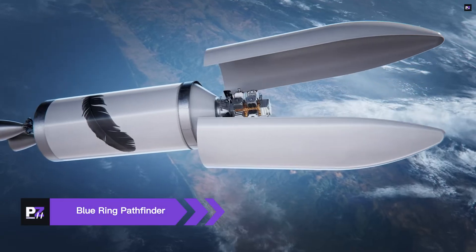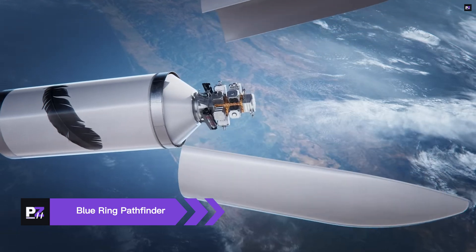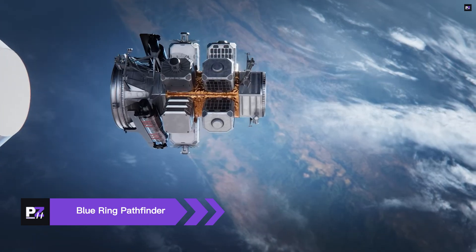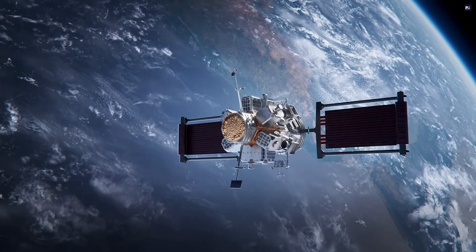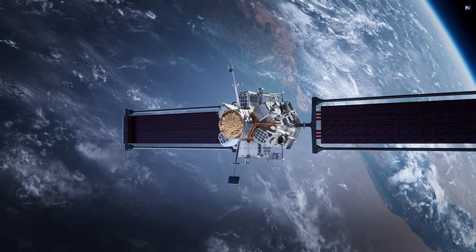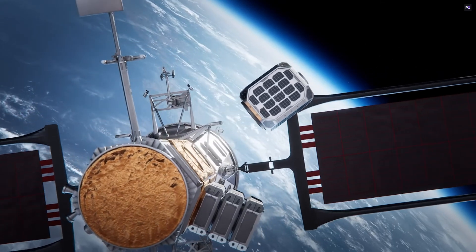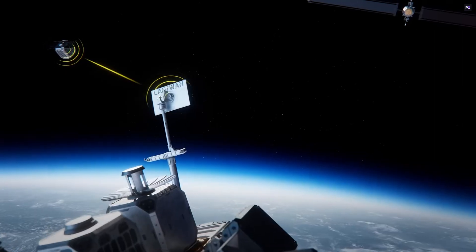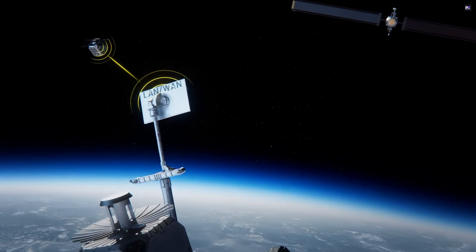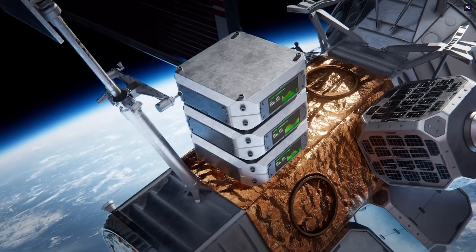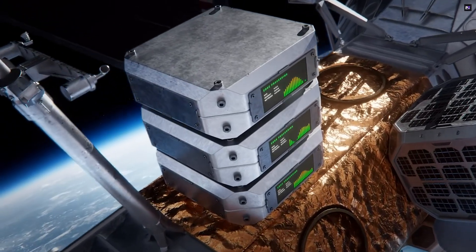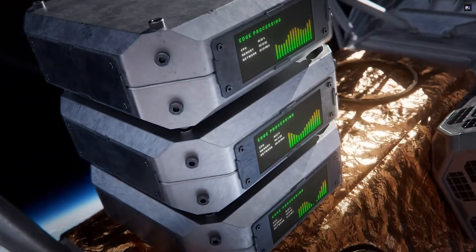The Blue Ring Pathfinder is an experimental mission from Blue Origin, designed to test the core systems for their upcoming Blue Ring Orbital Platform. Launched on January 15, 2025, aboard the inaugural flight of the New Glenn rocket, the Pathfinder remained attached to the rocket's second stage, serving as a crucial testbed for vital components. During its time in orbit, the Pathfinder's primary goal is to validate key systems such as communications, onboard computing, and power management.